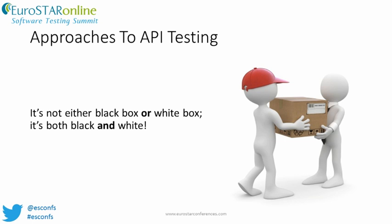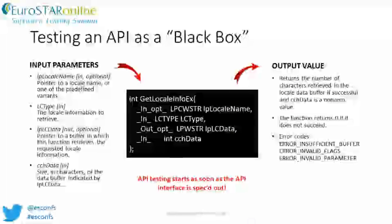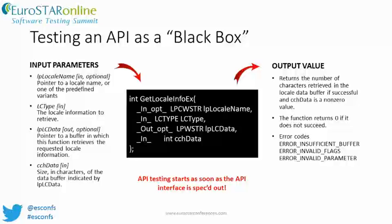Sometimes there is confusion about whether the approach to API testing is a black box or a white box activity. In my opinion, it is not an either-or proposition — API testing should include both approaches. The basic goal of black box testing is to assess the output conditions or state for a given set of inputs without taking into consideration the implementation or internal program structure. The API signature is defined well before the API is implemented, telling us what types of argument values are passed as inputs and the type and expected return value or results. Testing is focused on defining inputs and evaluating results without any knowledge of the implementation.